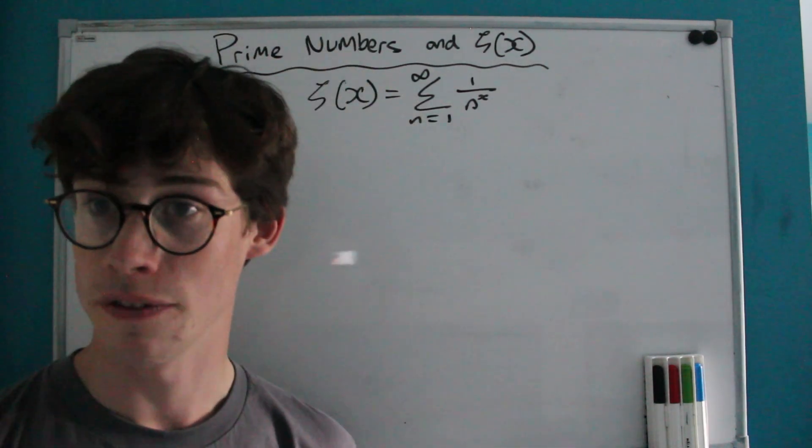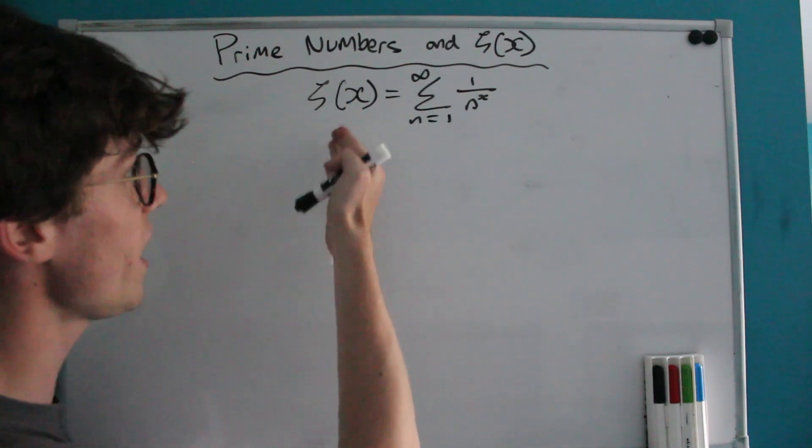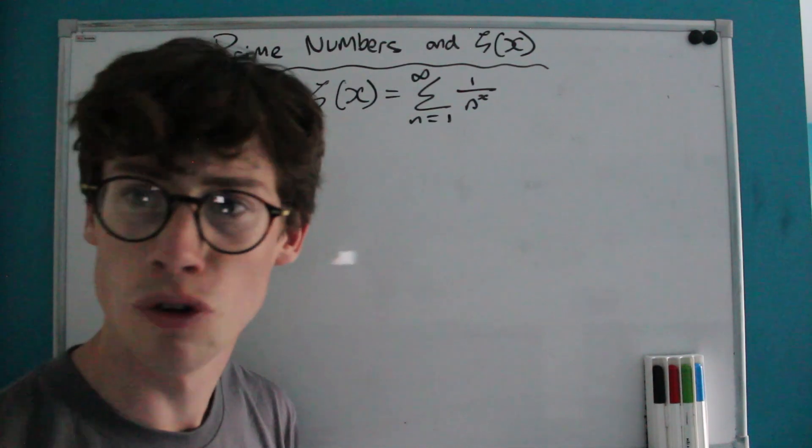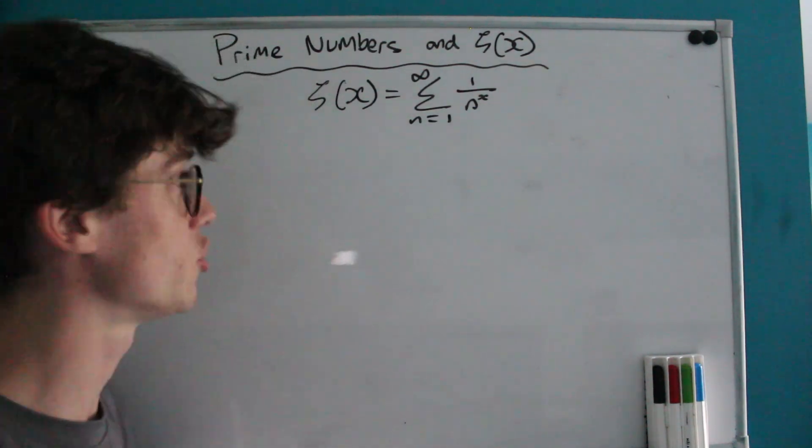So let's start by looking at the definition of the zeta function. It tells us that zeta of x is the sum from 1 to infinity of 1 over n to the x. I'm sure many of you are familiar with this function and have seen it before.